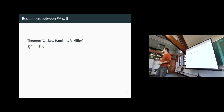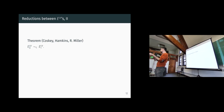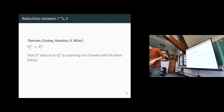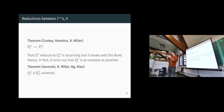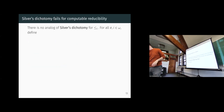On the other hand, some analogies break. It turns out that e0_C is completely computably reducible to e1_C — this contrasts with the Borel setting, where e1 was strictly above e0. In fact, e0_C is as complex as possible: it is sigma-3-universal, meaning any sigma-3 equivalence relation is completely computably reducible to e0_C.